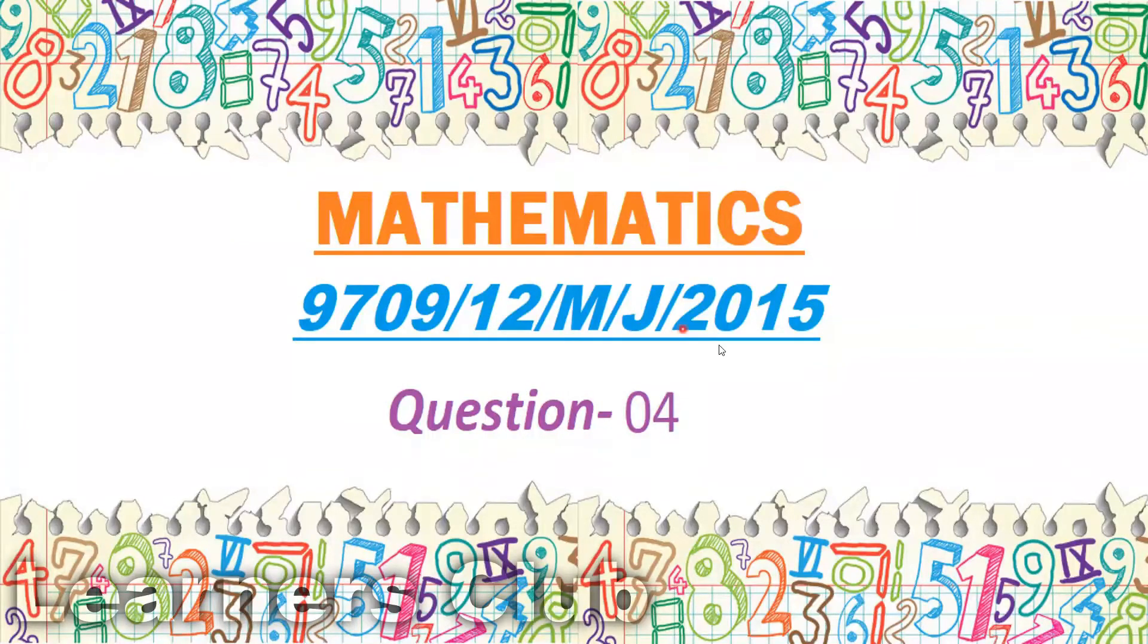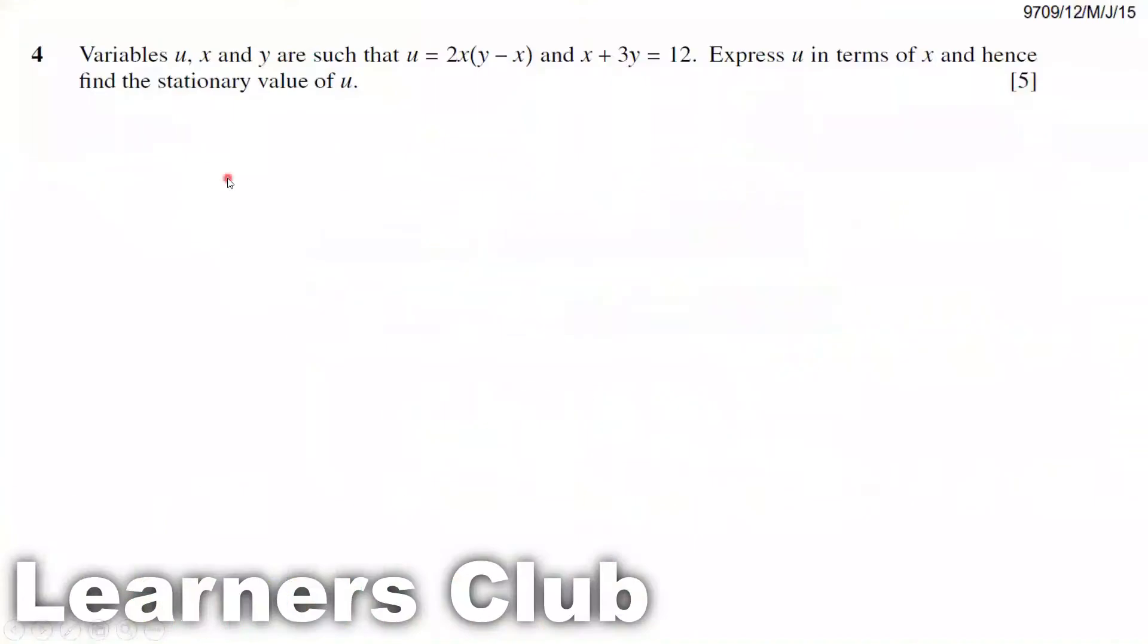Mathematics, May June 2015, Question 4. Variables u, x and y are such that u equals 2x(y minus x) and x plus 3y equals 12. Express u in terms of x and hence find the stationary value of u.